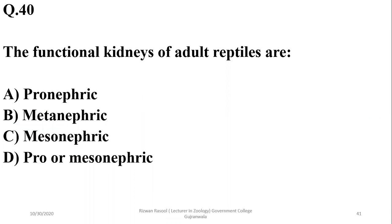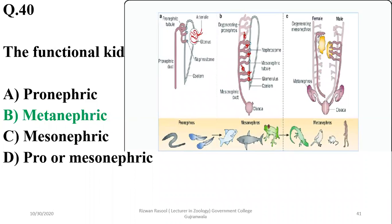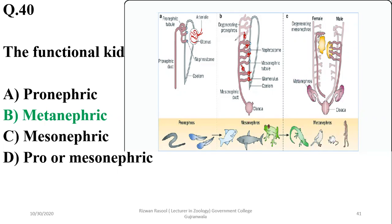Question thirty-nine: the functional kidneys of adult reptiles are metanephric. Pronephric kidneys are found in early animals, mesonephric kidneys in fishes and amphibians, while adult reptiles, birds, and mammals have metanephric kidneys. The correct option is beta.